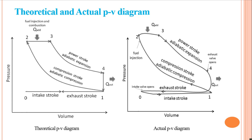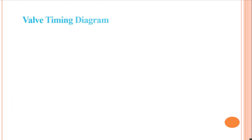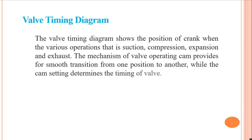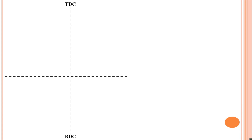If all these modifications are considered, the PV diagram changes accordingly. Now, what is a valve timing diagram? The valve timing diagram shows the position of the crank during various operations — suction, compression, expansion, and exhaust. The valve mechanism with an operating cam provides smooth transition from one position to another, while the cam setting determines the timing of the valve. This is our top dead center and bottom dead center.